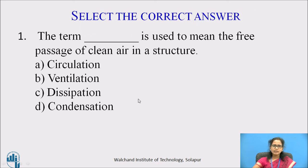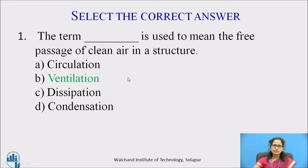MCQ: The term blank is used to mean the free passage of clean air in a structure. The options are: circulation, ventilation, dissipation, and condensation. The correct answer is ventilation — due to ventilation, free passage of clean air replaces polluted air.